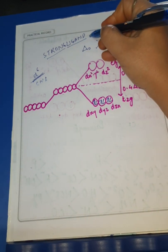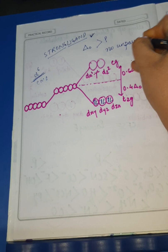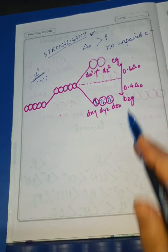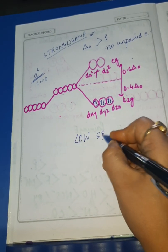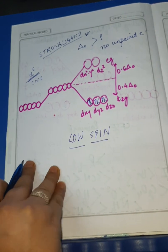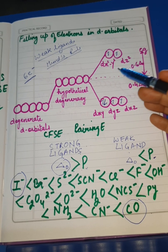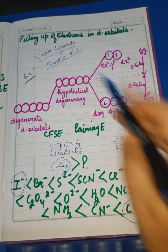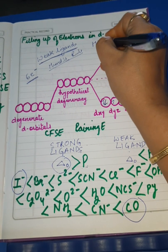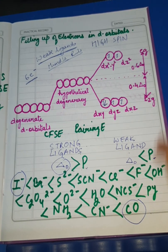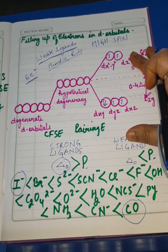With a strong ligand, there are no unpaired electrons in the d orbital. That is the reason strong ligands give rise to low spin complexes. With weak ligands, since pairing does not take place, we have a number of unpaired electrons — so weak ligands give rise to high spin complexes. These are the simple tricks you need to keep in mind to handle all such problems.